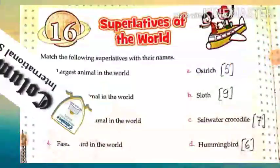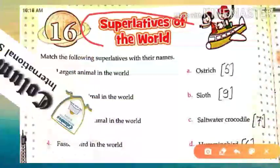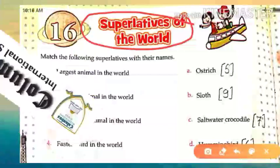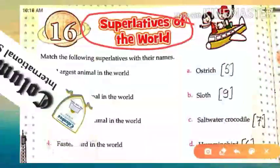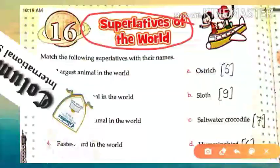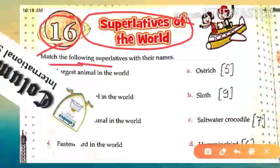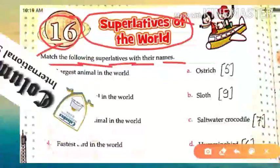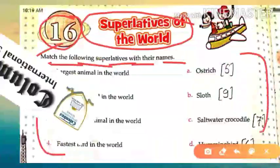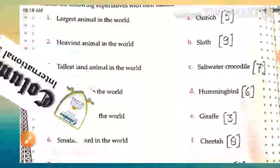Now let's move on to the next chapter — page number 16, Chapter 16. This chapter's name is 'Superlatives of the World.' In this chapter we are going to read about some topics which are superlatives — we cannot compare these things with other things because they are the greatest. Let's start from here: match the following superlatives with their names.